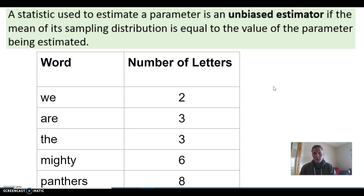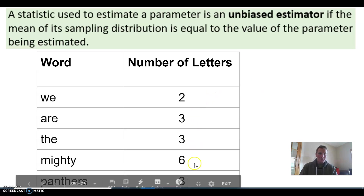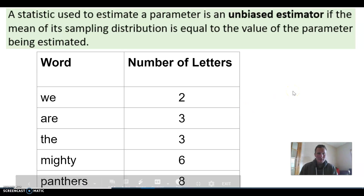If we did this over and over again, would the mean of all our sample means be the mean of the population? We can calculate the true mean of the population because it's small: 2 plus 3 plus 3 plus 6 plus 8, divided by 5. That would be the true mean of the population — the parameter we would be interested to know.